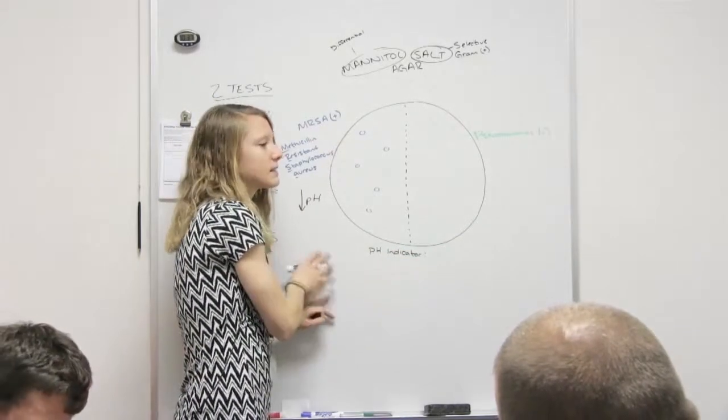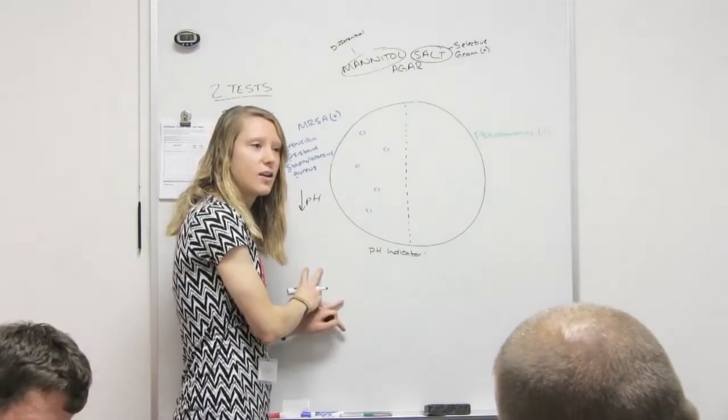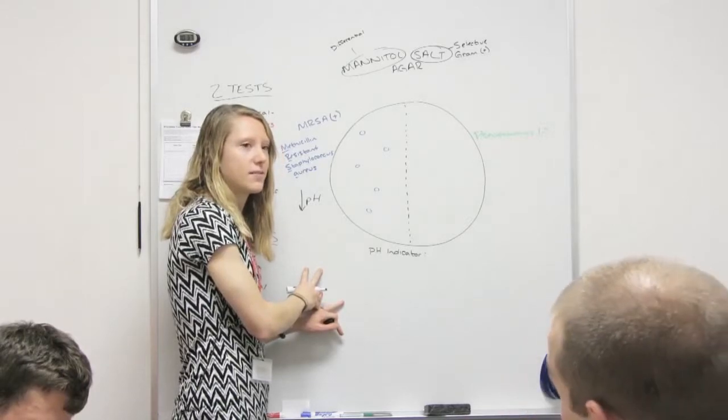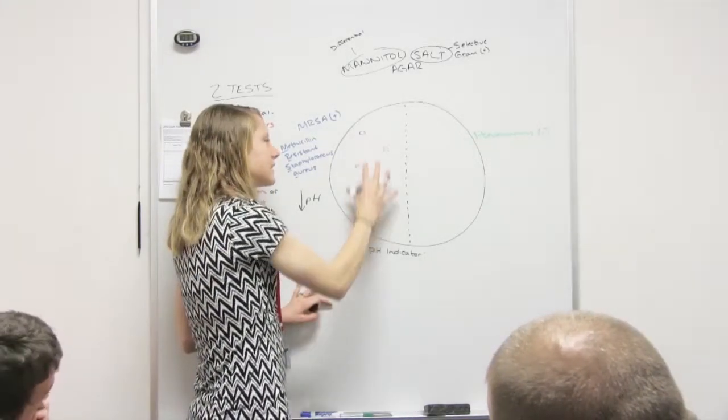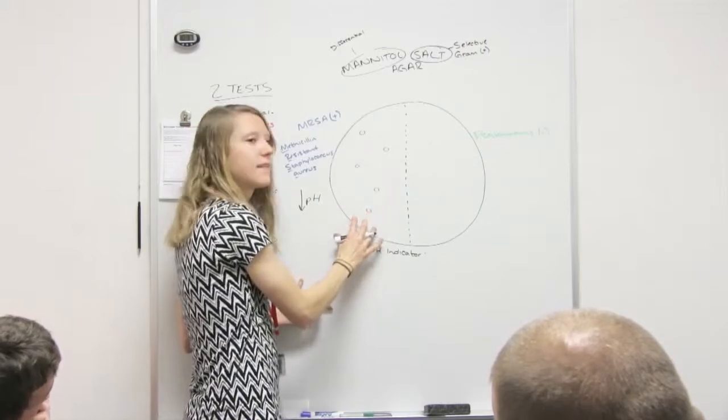So to the plate, not only do we have the agar, the salt, and the mannitol, but we also have a pH indicator. What color is this plate before, before I do anything? It's red. It's red.